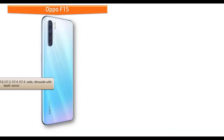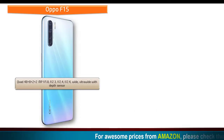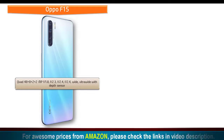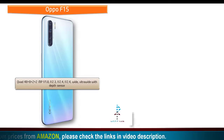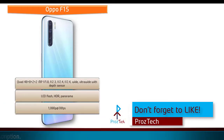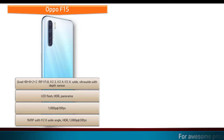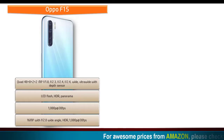Oppo F15 comes with quad cameras: 48 + 8 + 2 + 2 megapixels primary cameras with f/1.8, f/2.3, f/2.4, and f/2.4 apertures, featuring wide and ultra-wide angles and a depth sensor. It shoots 1080p video at 30 fps and is equipped with a 16-megapixel front camera with f/2.0 aperture, wide-angle lens, and 1080p recording at 30 fps.